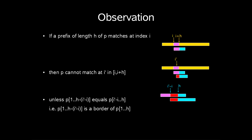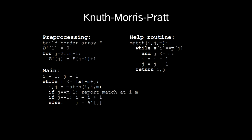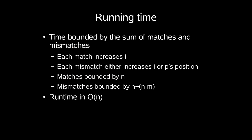We went over this observation: if p matches at index i, p cannot match at i prime in [i, i plus h], unless p[1] up to h minus i prime minus i is a border of p[1] up to h. This was the basic idea of Knuth-Morris-Pratt containing these three subroutines: preprocessing and match, and we also had the main. The running time was shown to be order n.